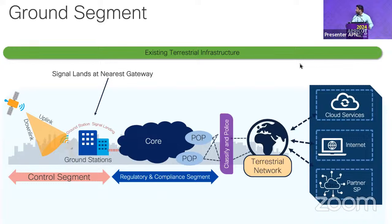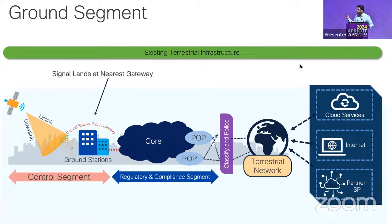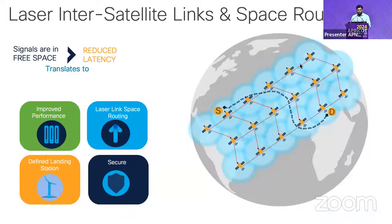Three types of services are available: mobile satellite service, fixed satellite service, and broadcasting. In the ground segment, a request from the user station goes to the satellite network, which reflects the signal back to the ground station, then to the core and through peering points to the terrestrial network — for cloud, internet, or partner SP connectivity.